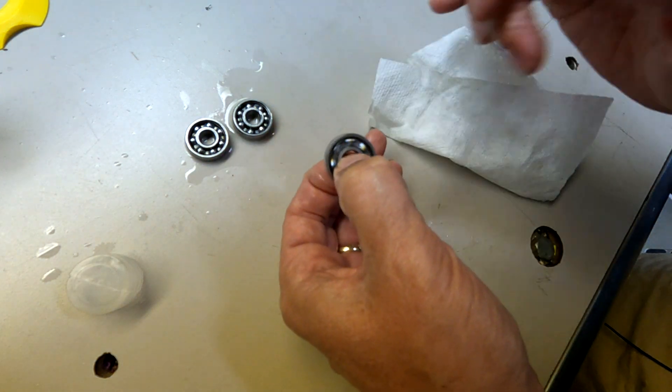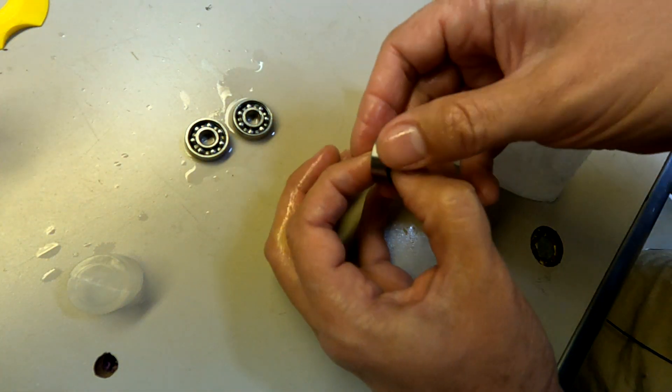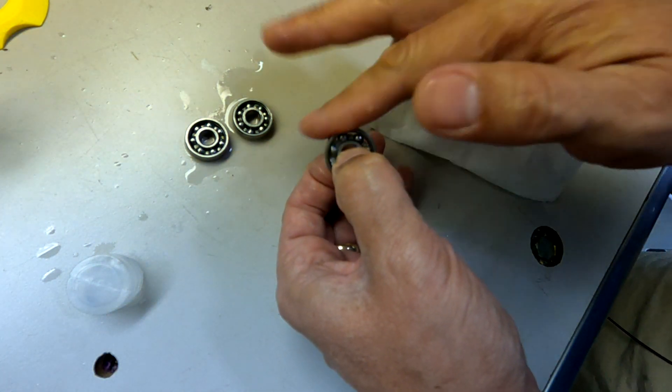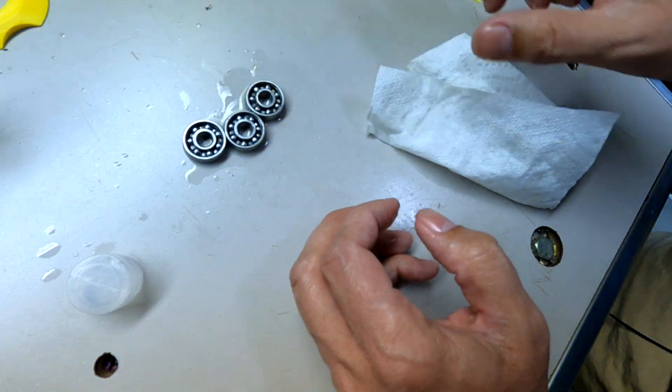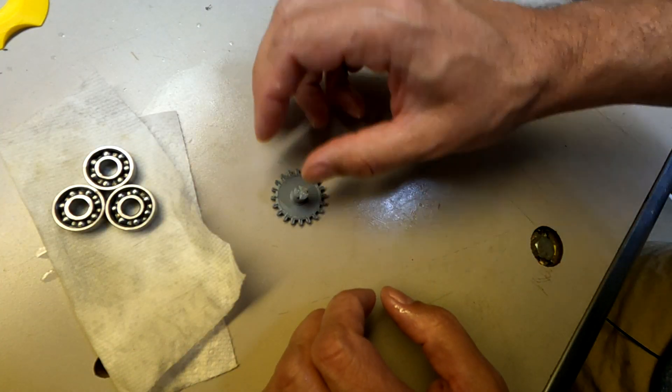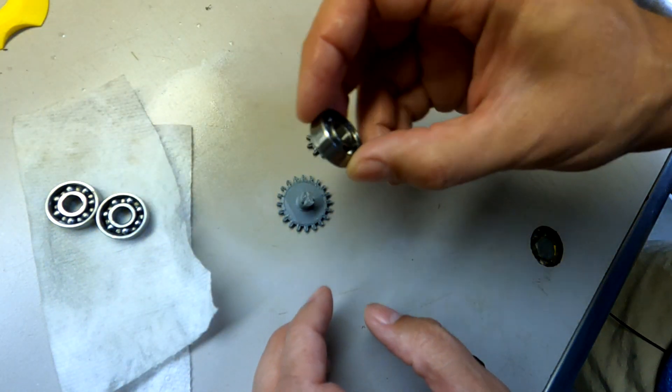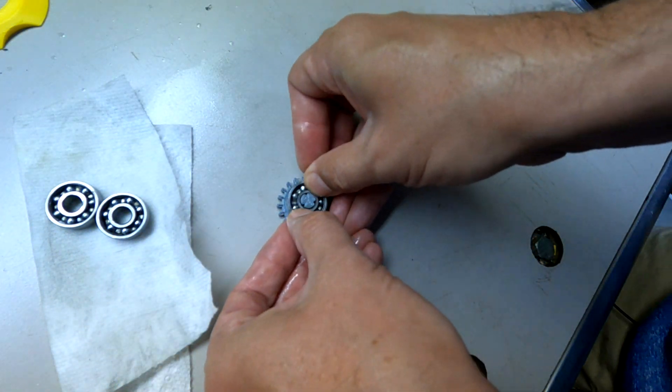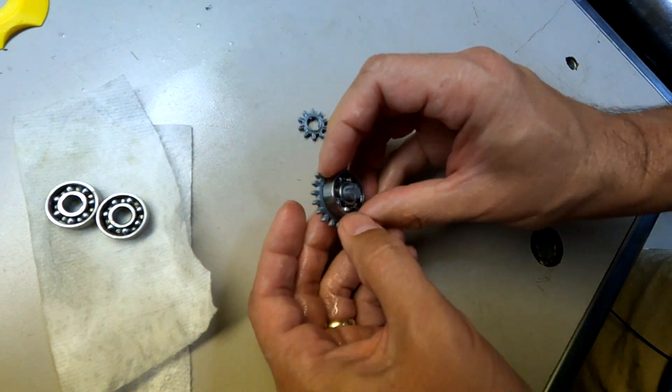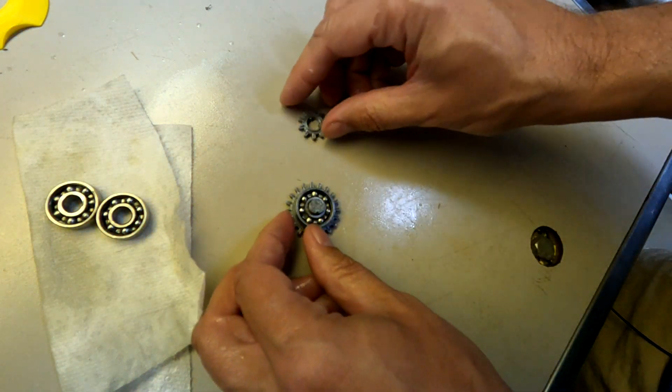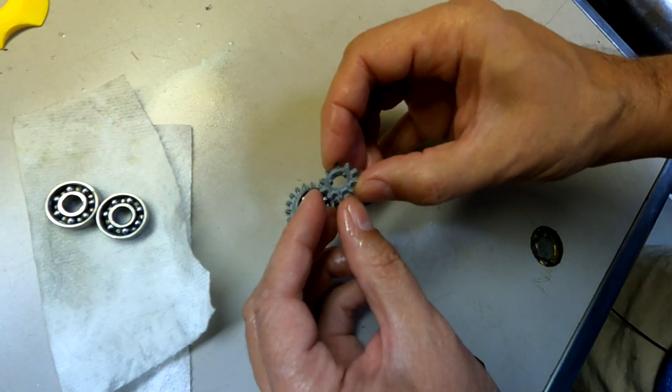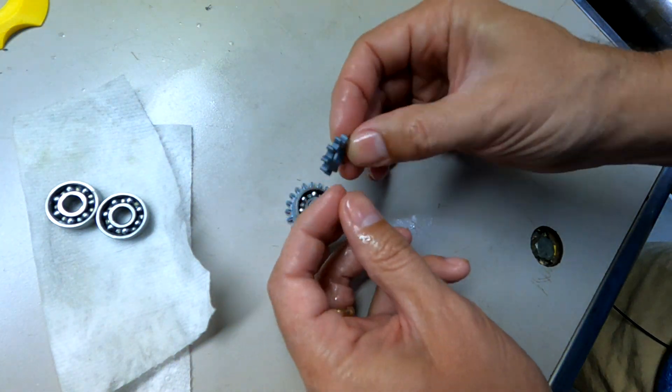Now we have three free spinning bearings and we can proceed with the assembly of the stand. The first thing we're going to put together is this little gear reduction. We'll take one of our bearings and slide it onto that gear, and then take this gear and you can see one side has a little lip on it.